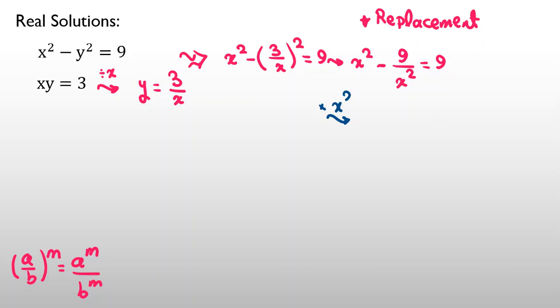Now, I want to get rid of denominators. We multiply by x squared. We multiply by x squared. x to the 4 minus, because x squared times x squared is x to the 4 minus 9, equal to 9 x squared. Now, let's take all things to the left-hand side.